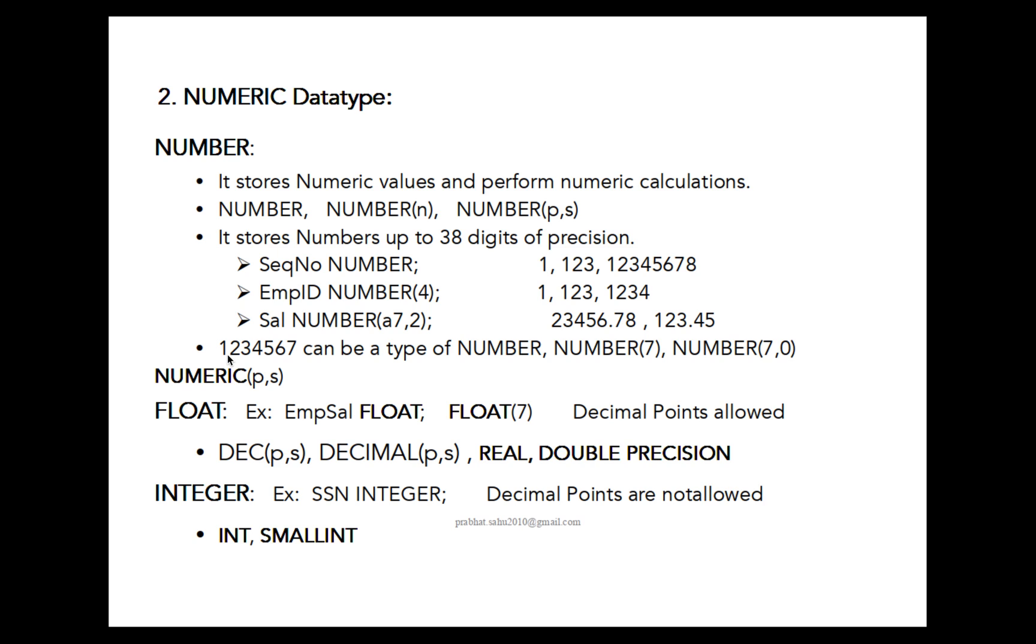Again I have written 1234567, you can save this type within NUMBER data type with NUMBER(7) or NUMBER(7,0). Means precision will be 0, meaning after decimal point no digits will be there. So you can save this 1234567 within these 3 types: NUMBER, NUMBER(7), or NUMBER(7,0).